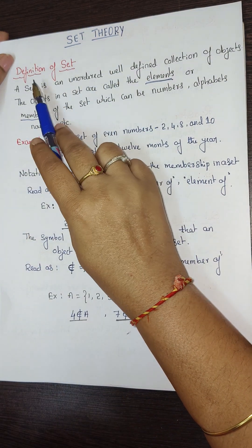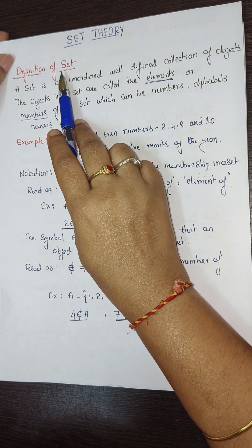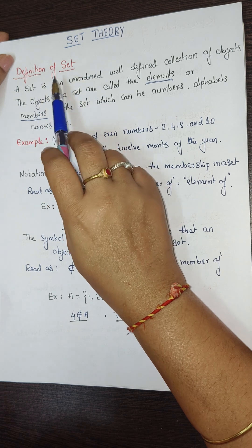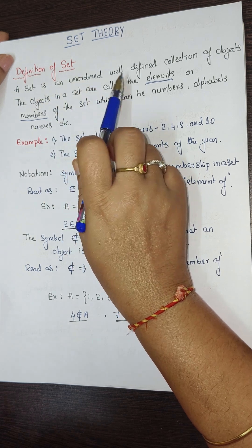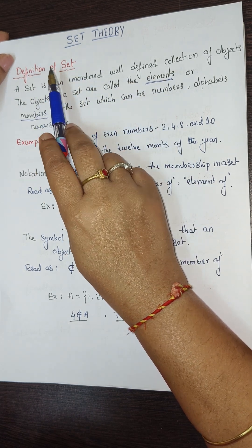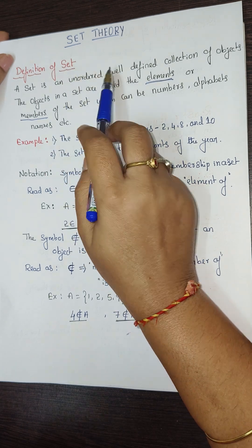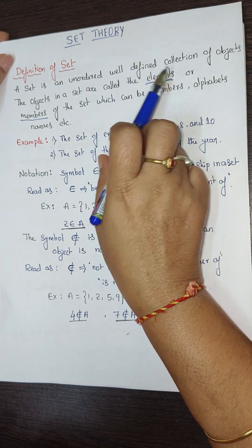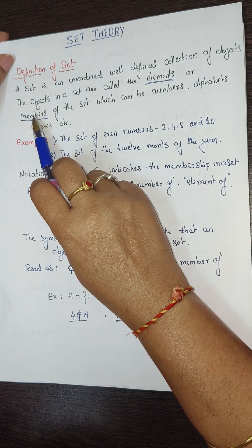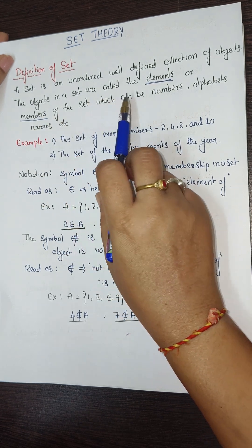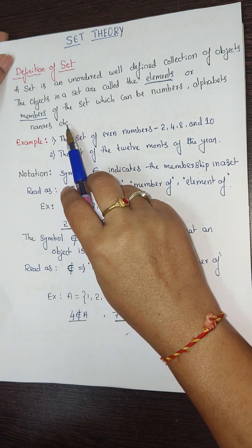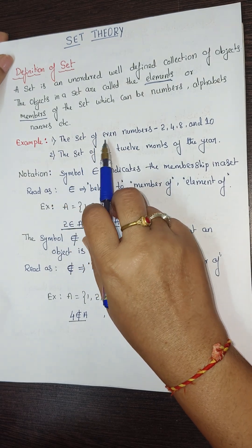Hi everyone. In this video on set theory, we will see the definition of set, representation of sets, and types of sets. A set is an unordered, well-defined collection of objects. These objects are called elements or members of the set, and they can be numbers, alphabets, or names.